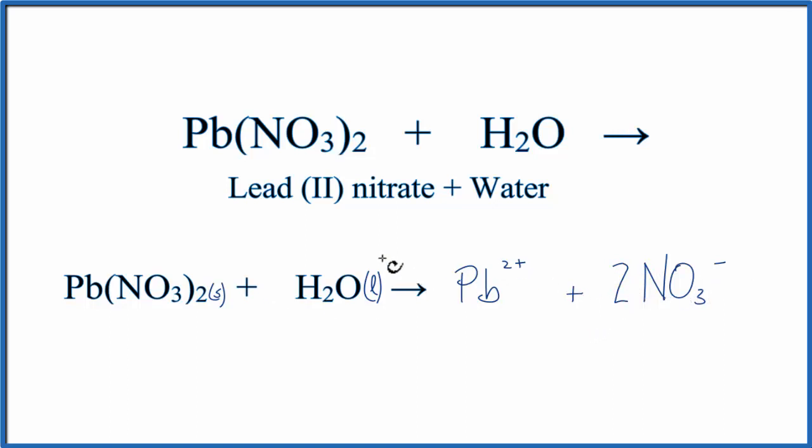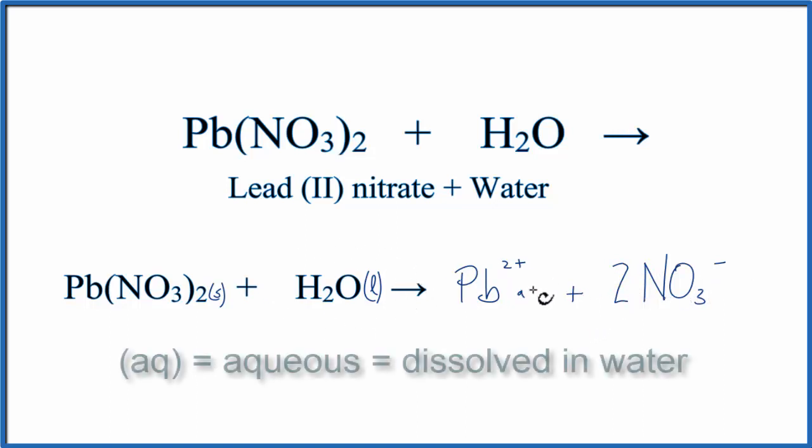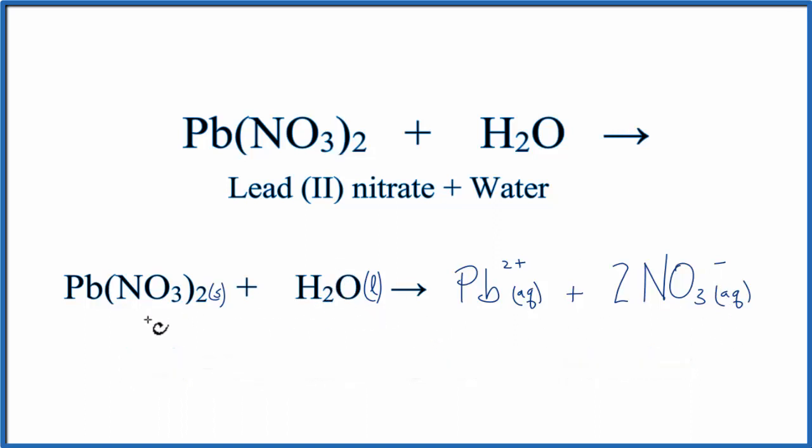And these are dissolved in water. So we're going to write AQ after each one. That means aqueous. Aqueous means it's dissolved in water. And because of that, we don't need to write H2O on this side. And this is the equation for Pb(NO3)2 plus H2O.